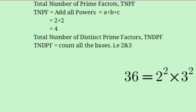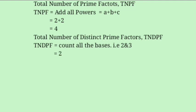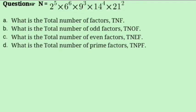Total number of distinct prime factors: we just count all the bases. In our case we have 2 and 3, so the total number of distinct prime factors is 2.